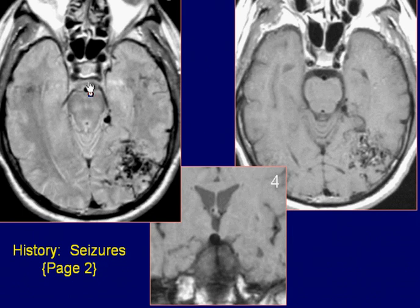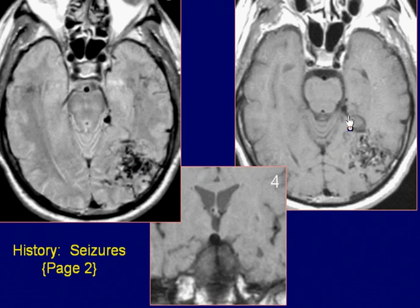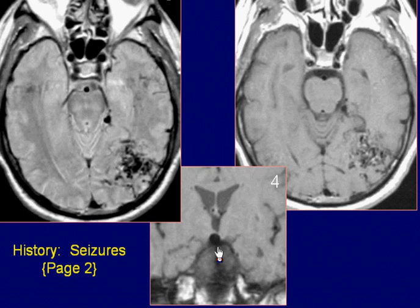Axial proton density and T1-weighted images demonstrate a serpentine flow-void lesion with supply from the left posterior cerebral artery. Coronal T1-weighted image reveals focal dilatation of flow-void at the tip of the basilar artery.